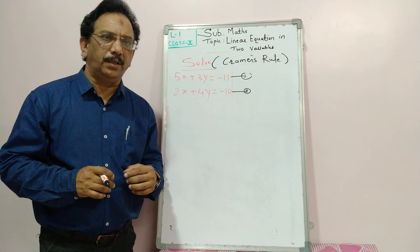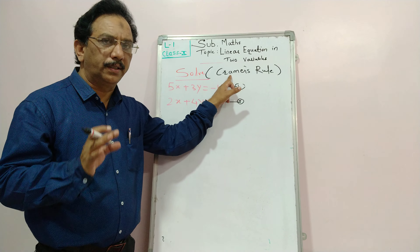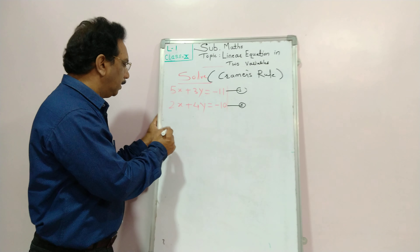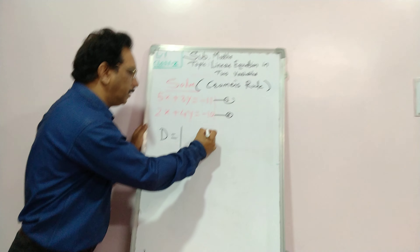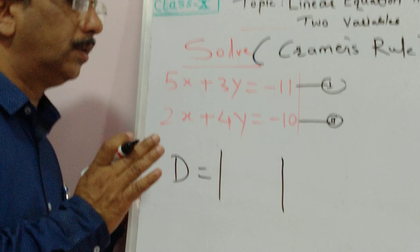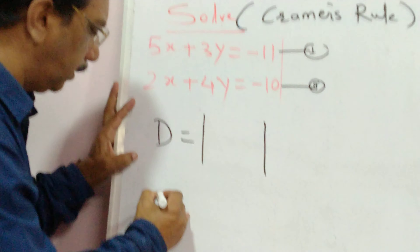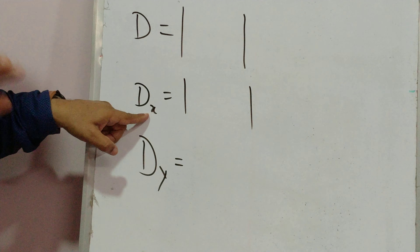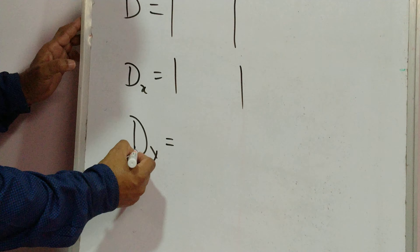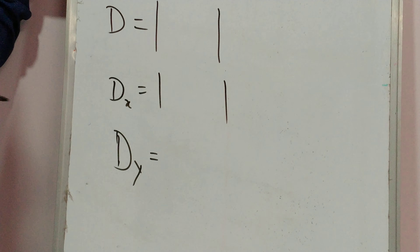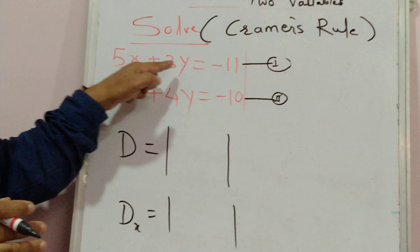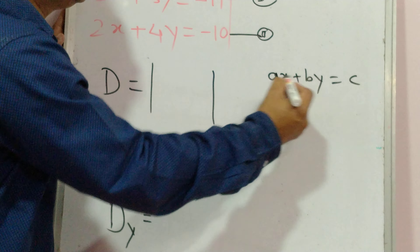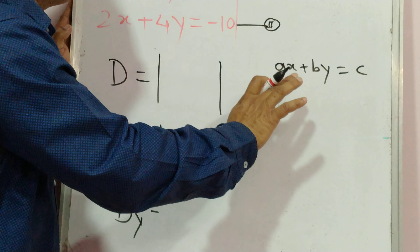To solve linear equations in two variables by another method: the method is called Cramer's rule. Cramer's rule is a method using determinants. A determinant is represented by the letter D and is an arrangement. To solve a pair of equations by this method, write three determinants: D, D of x, and D of y. First, write the equations in the standard pattern: ax plus by equals c, where a, b, and c are real numbers and x and y are variables.